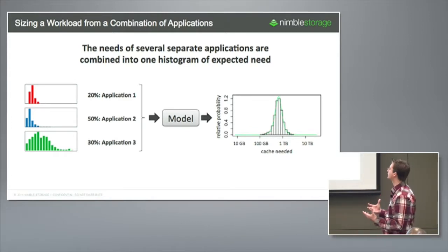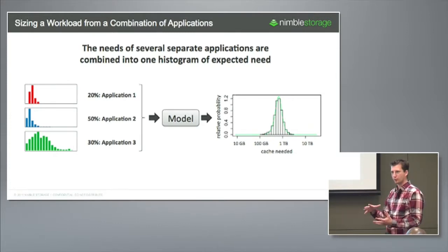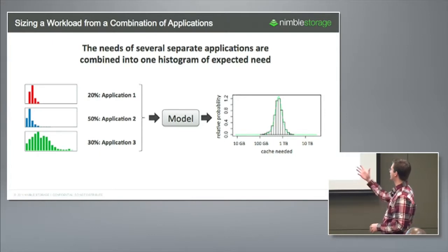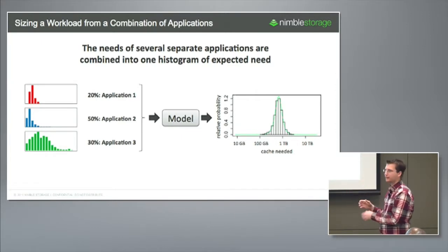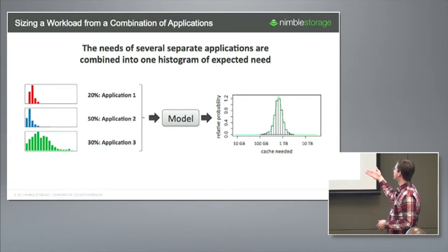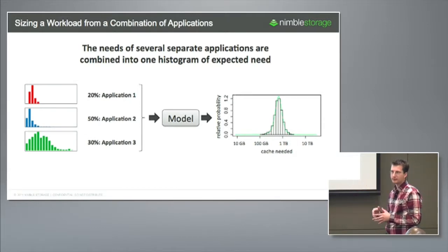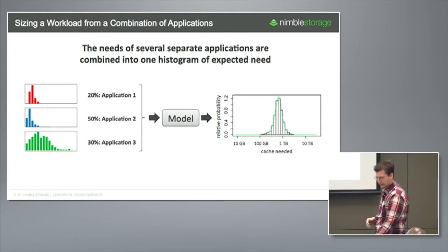One of the features we built into our sizing tool is the ability to consolidate several workloads, because a lot of our customers are not just running one thing. So if you want 20% of application one, 50% of application two, 30% of application three, we will consolidate that into one probability distribution of cache need or CPU need for that particular combination of applications.